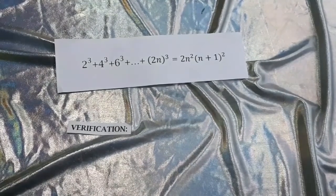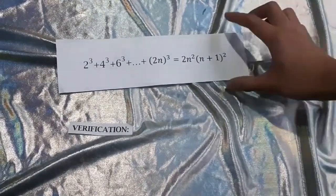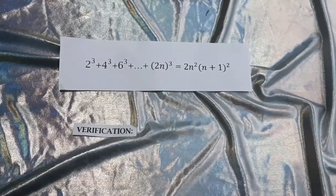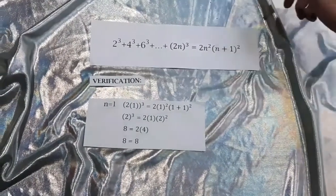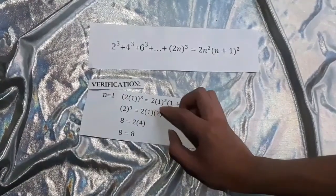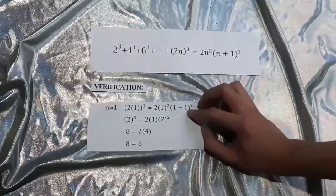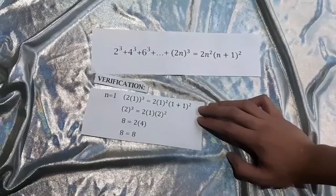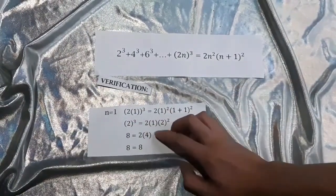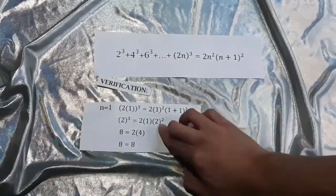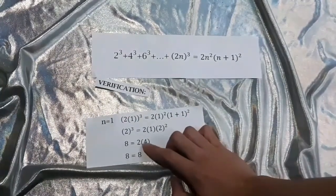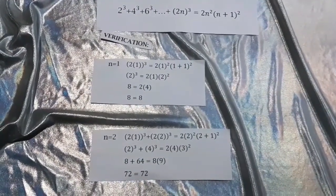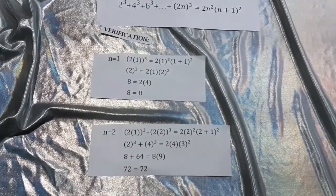For our first step, according to the rule, we need to prove or verify that this equation is true. When we replace n with 1, we'll have (2·1)³ = 2(1)²(1 + 1)². Simplifying this, 2³ = 2(1)(2)². That's 8 = 2 times 4, which equals 8. Therefore, we're able to prove that n equals 1 because our equation is true.